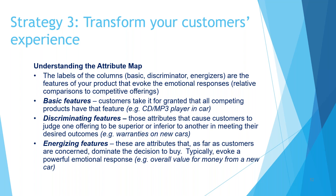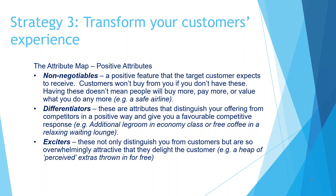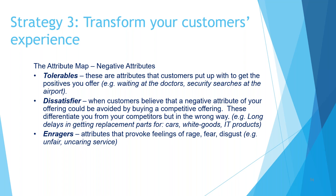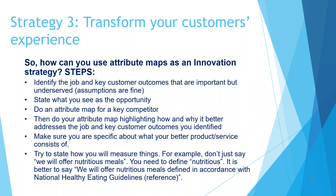Warranties can be a discriminating feature — you see seven-year warranties on some vehicles. Non-negotiables include a safe airline. Differentiated features could be additional leg room or free coffee in a waiting lounge, and exciters can be perceived extra value for free, like lounge membership. Tolerables are things like waiting at doctors or security searches at the airport. Dissatisfiers include long delays getting replacement parts for cars, white goods, and other products. And things that really annoy you — uncaring or unfair service — can be those enragers. This is a systematic process to break down your offerings into categories to work out what's adding value, what's helping you make sales, and what's detracting from sales or being offered over and above what's needed.